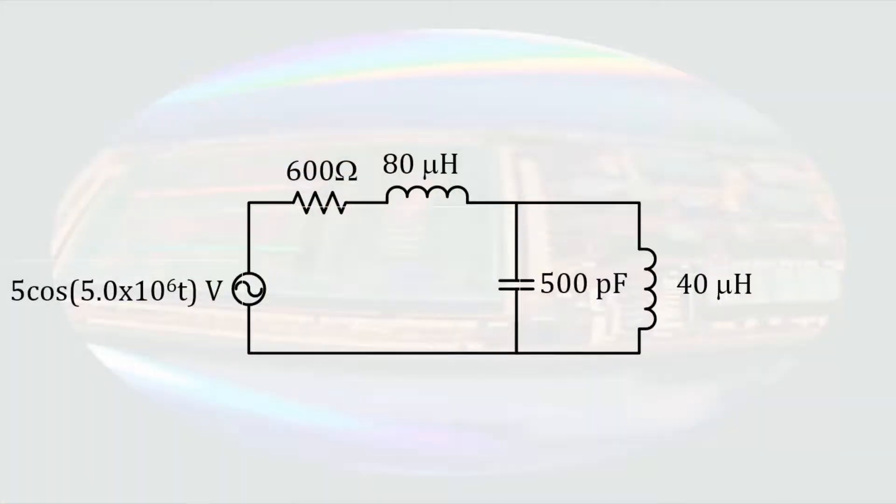Let's start with a voltage division problem. I do not want to pick an entirely trivial problem, so let's start with a circuit that will require at least one additional step before we do voltage division. Here is a circuit containing a sinusoidal source, a resistor, capacitor, and a couple of inductors. Our goal will be to determine the time-varying voltage across the 500 pF capacitor.